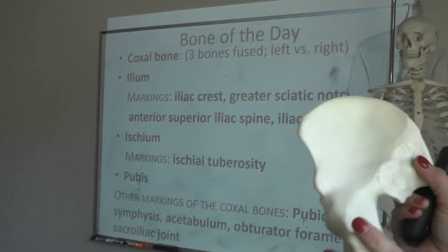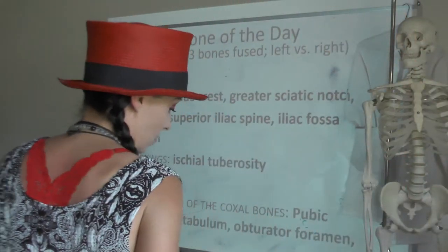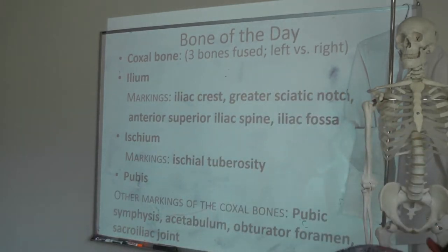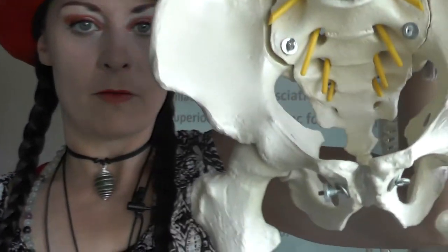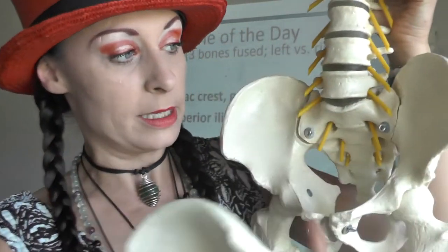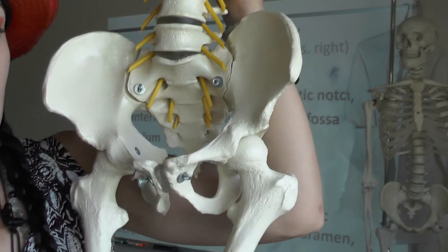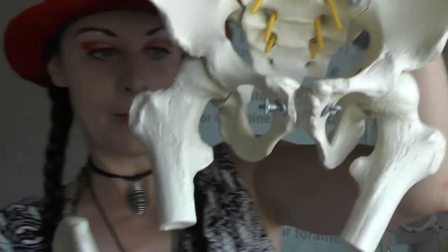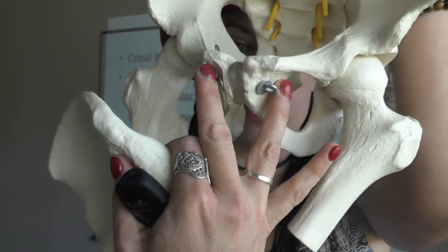The pubic symphysis can only be seen when we have a whole pelvis — it's the pad of fibrocartilage between the pubic bones. A pelvic girdle is different than a pelvis: a pelvic girdle is one oscoxa that attaches one lower limb to your appendicular skeleton. The pelvis is two oscoxa and part of your vertebral column.